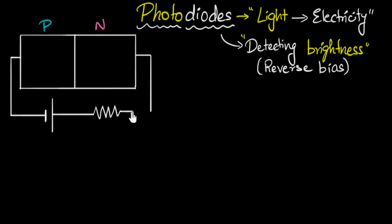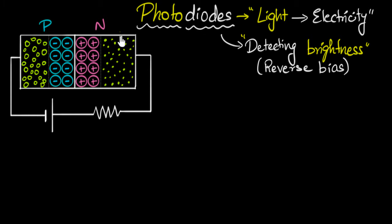Before we shine light, let's quickly recap. A P-N junction has holes on the P-side and electrons on the N-side, with a depletion region in between containing only space charge — no holes or electrons. The depletion region acts as a barrier. When reverse biased, the holes and electrons are attracted away from the depletion region, making it wider, so it becomes even more difficult for electrons and holes to diffuse into each other.